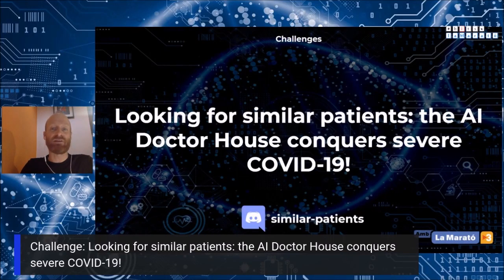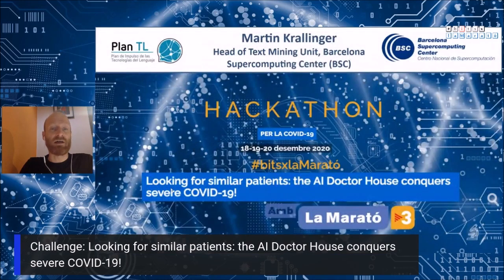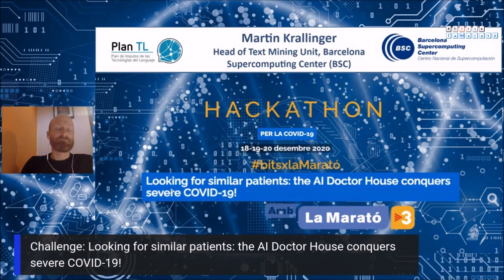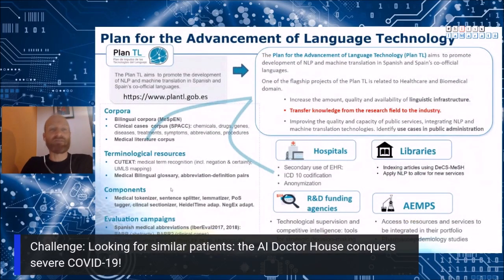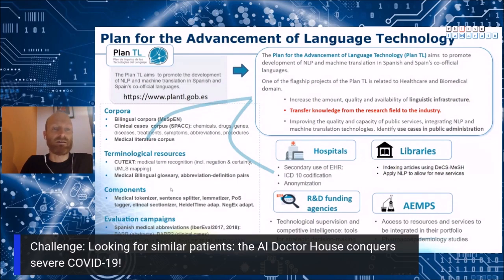This track is about looking for similar patients in COVID-19 cases and other diseases. It is promoted by the Plan for Advancement of Language Technologies. We are trying to build resources for processing health-related content in Spanish, Catalan, Galician and Basque, including clinical records, medical articles and other data resources.